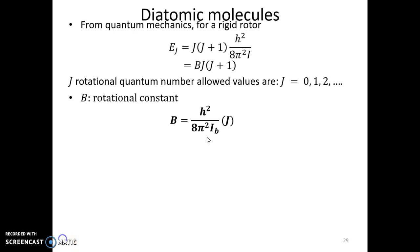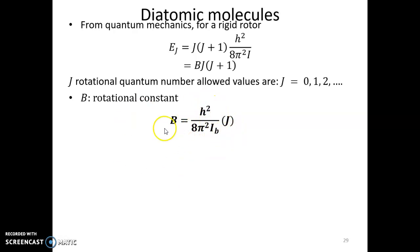By convention, the rotational constant B is defined using Ib. You can also define it using Ic, but B is the standard convention in most textbooks. Note that using c for the rotational constant could be confused with the symbol for the speed of light.